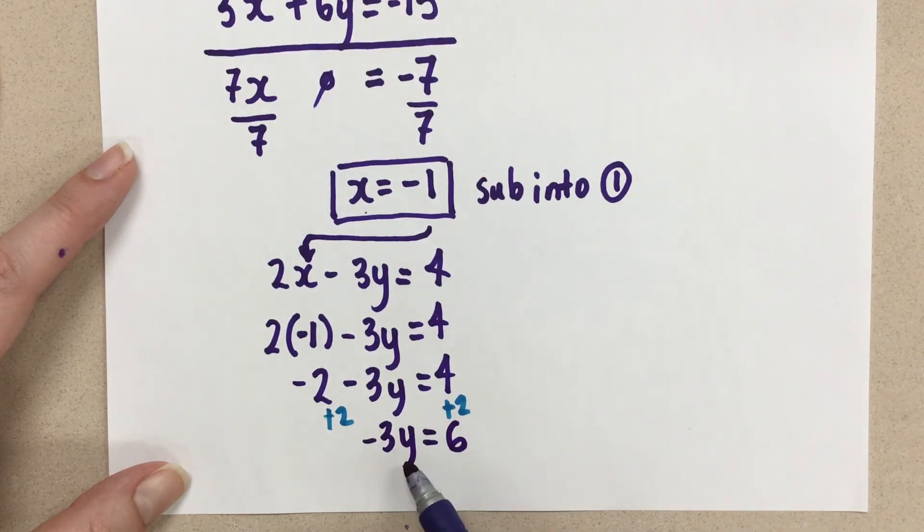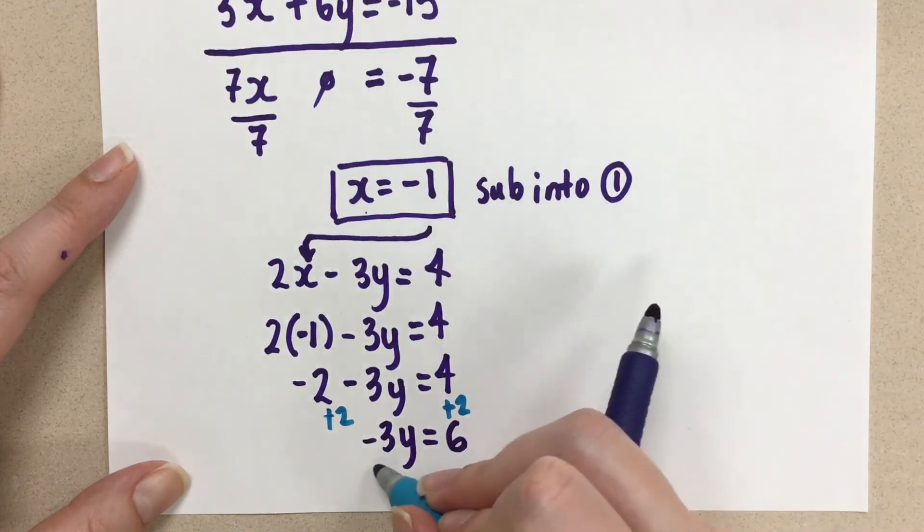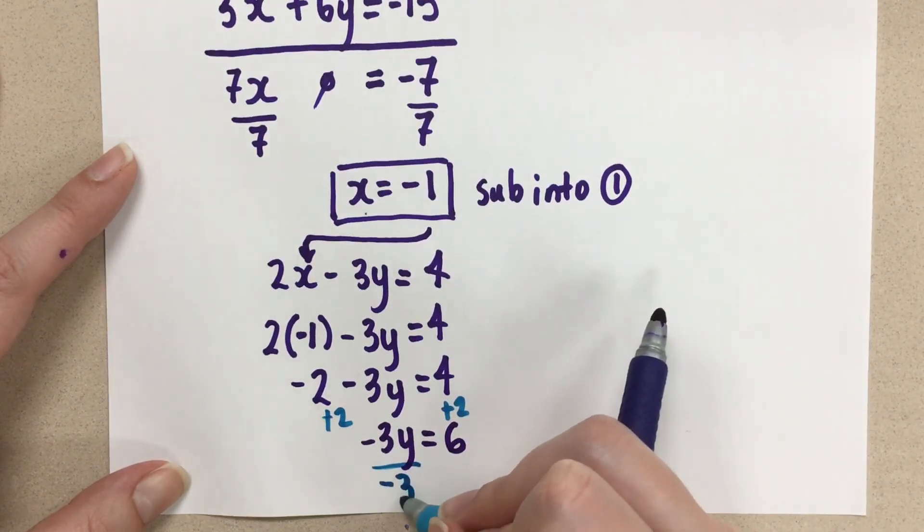So we've eliminated the minus 2, and we're left with negative 3y equals 6. So now to get the y by itself, we do the opposite operation. I'm going to divide on both sides by the coefficient of y. That's negative 3.